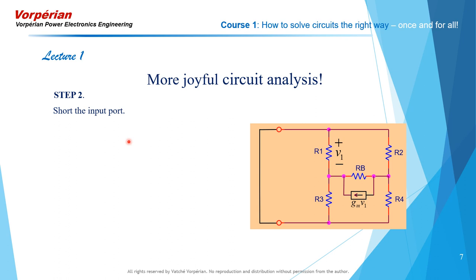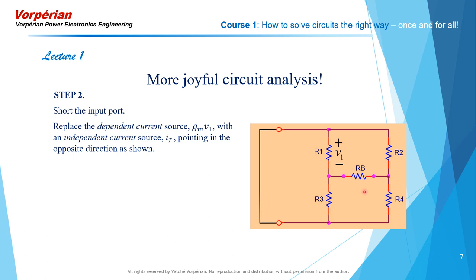Next, step two: short the input port. Then replace the dependent current source GM·V1 with an independent current source pointing in the opposite direction and determine how much V1 is generated by IT. Determine that gain V1 over IT, which is an inverse gain with respect to GM. GM itself is a transconductance. This one here is a transresistance — that's why it's an inverse gain, and that's why we have the bar here.